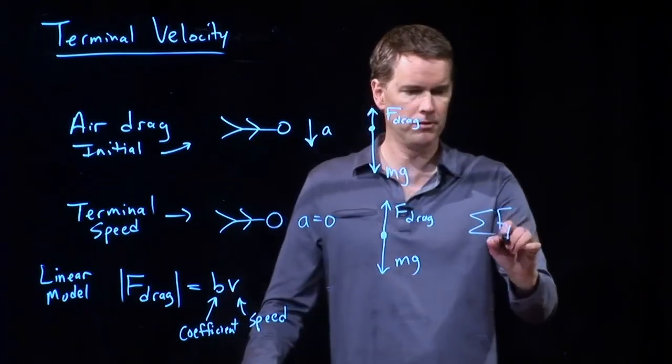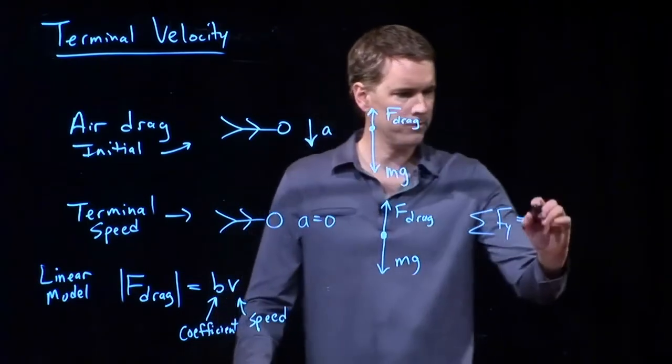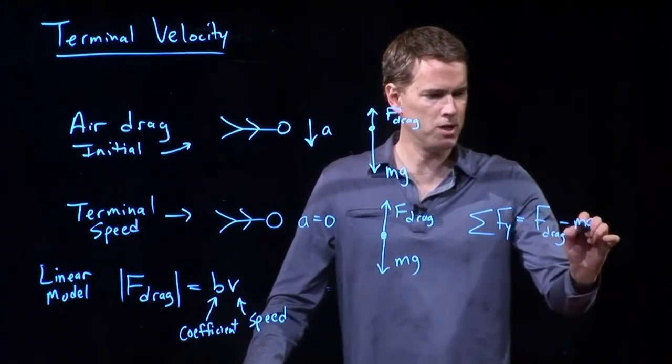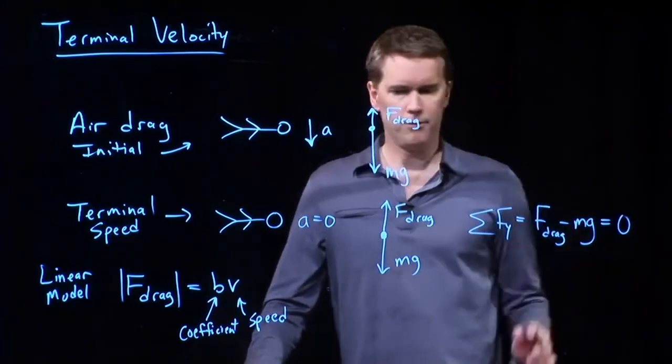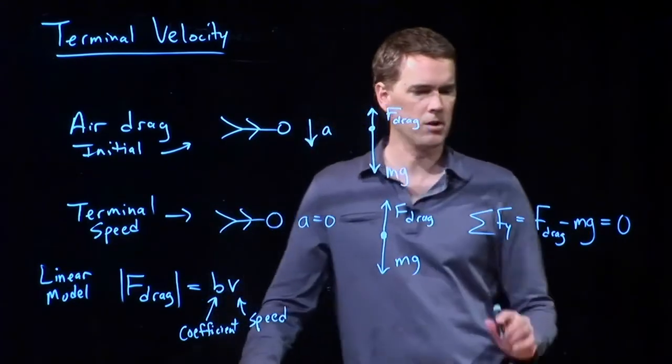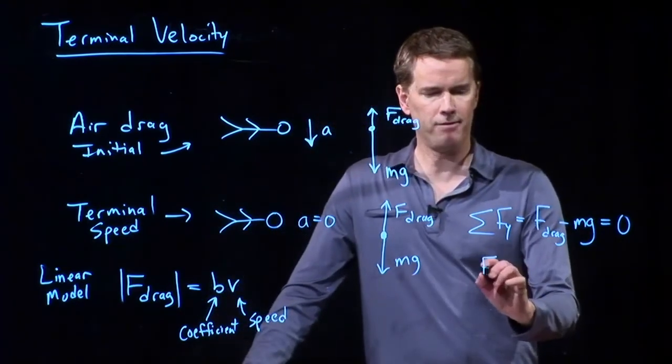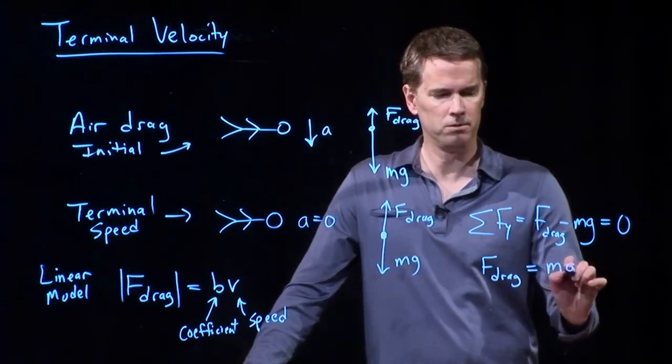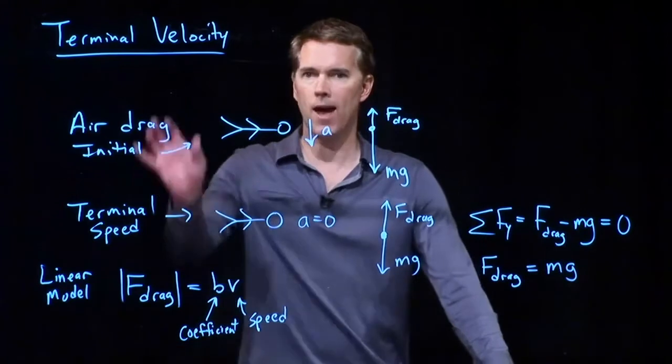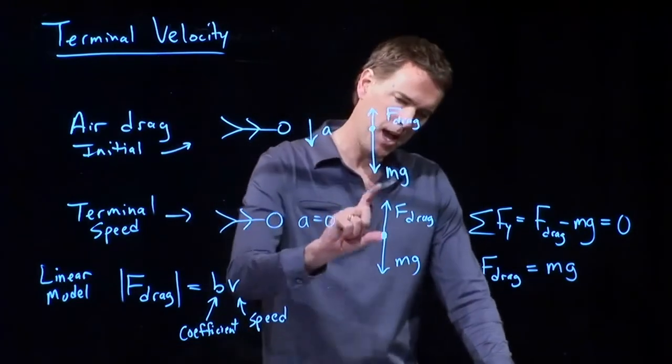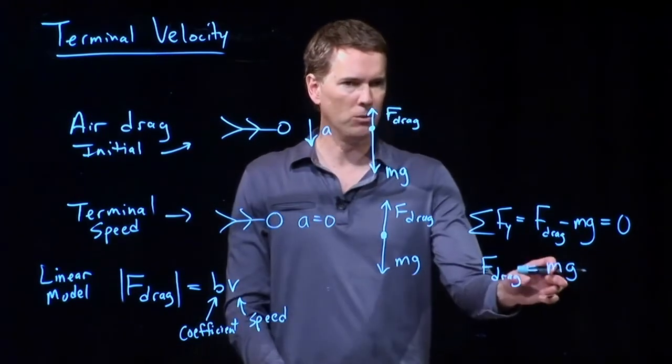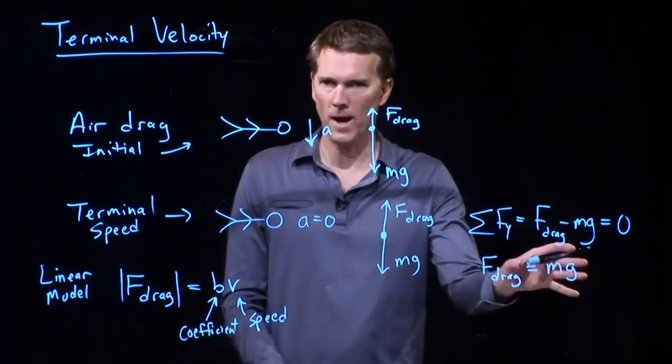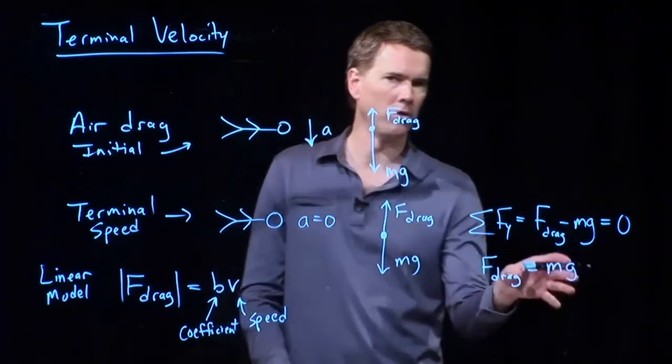Okay. Let's go over here. Sum of the forces is what? Well, we've got drag going up, mg going down. If we're at terminal speed, acceleration is equal to zero, and I get F drag is equal to mg. So, at terminal velocity, the air resistive force is exactly equal to mg, which is what a lot of people call weight. I like to call it the force due to gravity.